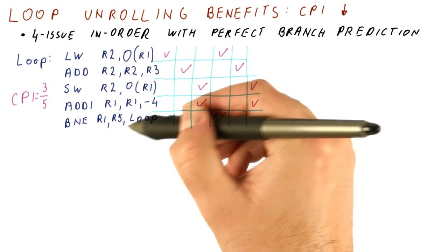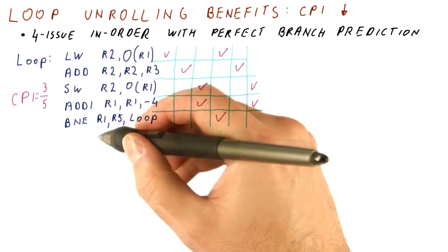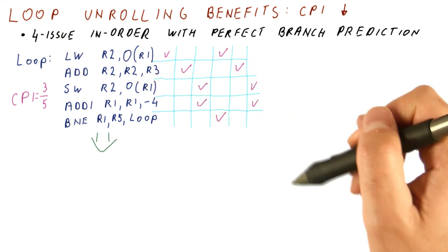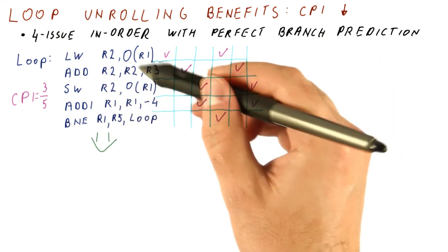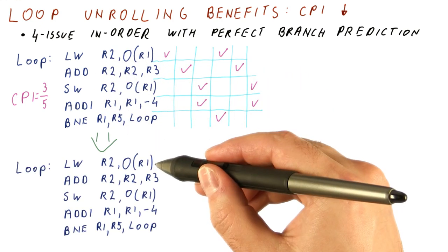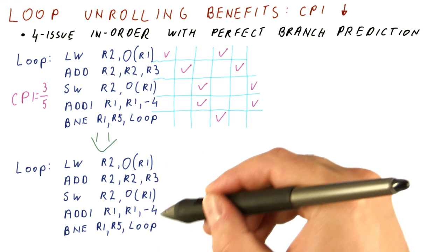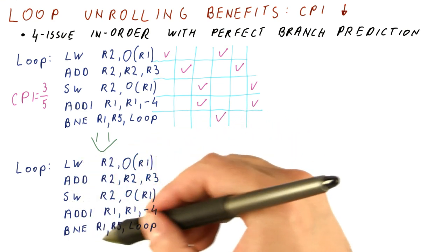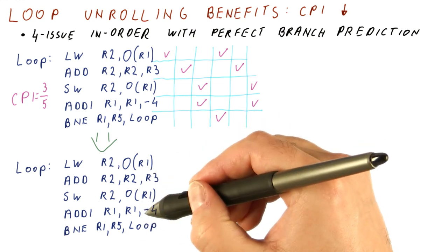But remember that we can do scheduling of this loop to try to improve the CPI. So before we get into what's the CPI of the unrolled loop, let's see what the CPI is if we schedule this loop body. Our scheduling will start out with this loop body, and then try to maximize the CPI that we can get by reordering the instructions.